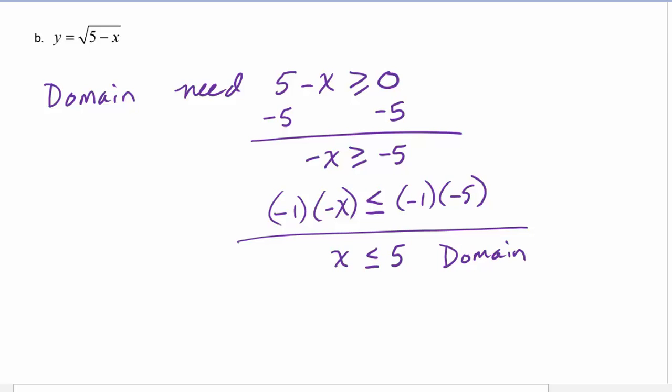Now the y values, if we think about this, we know that the biggest number we can put in for x is 5. If we put 5 into this function, we would get 5 - 5, which is zero. Now as we put in smaller numbers for x, say we put in a 1, 5 - 1 is 4, the square root of 4 is 2. So we went from zero to two as x gets smaller.